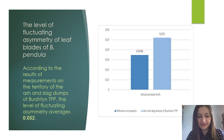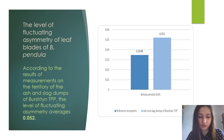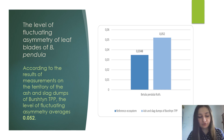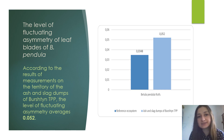During the study, the coefficient of fluctuation asymmetry based on the area of the right and left halves of the leaf blades was determined. According to measurements on the territory of the ash and slack dumps of Burshtyn Thermal Power Plant, the level of fluctuation asymmetry average is 0.052. On the territory of the reference ecosystem, the level of fluctuation asymmetry is 0.0348.